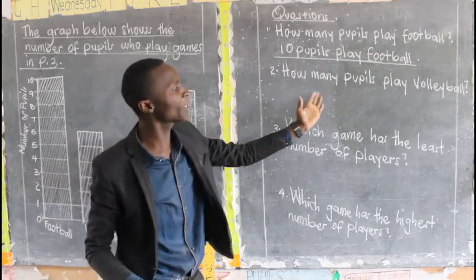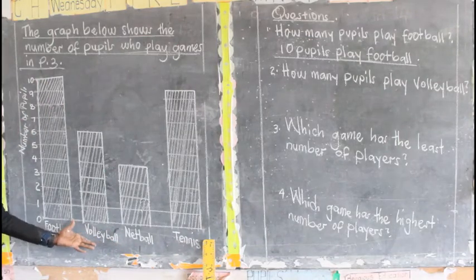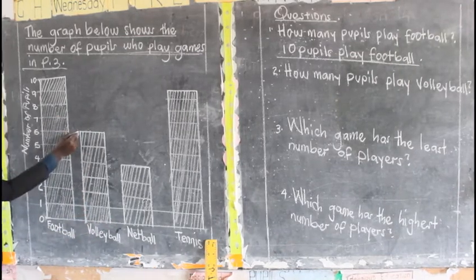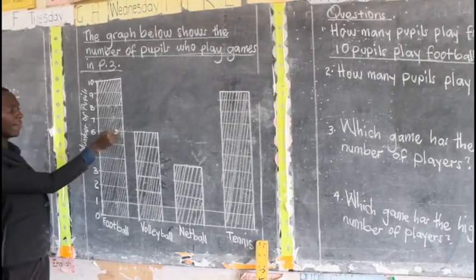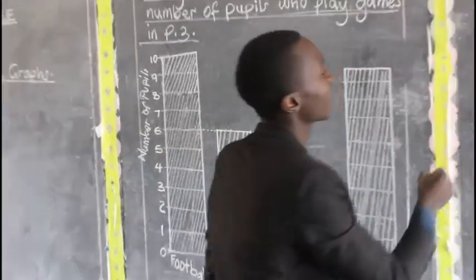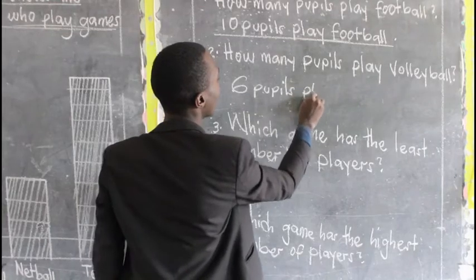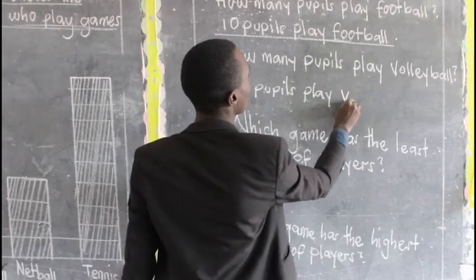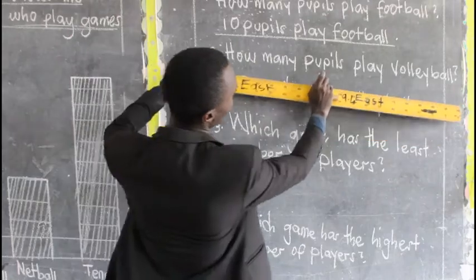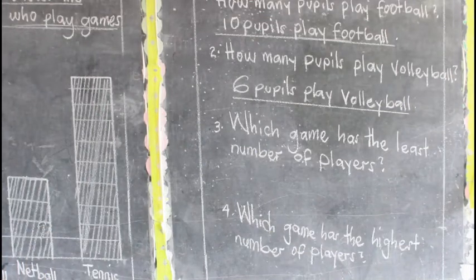The next question: how many pupils play volleyball? We come and look at the column for volleyball. This column ends here — you come and see how many pupils play volleyball. They are six pupils. So, six pupils play volleyball. After writing our answer, we have to underline it properly.